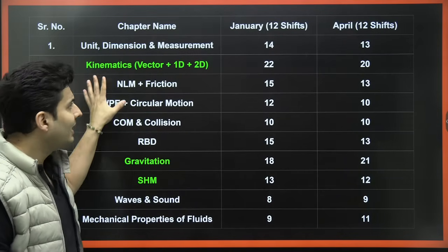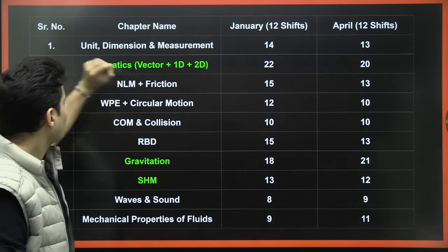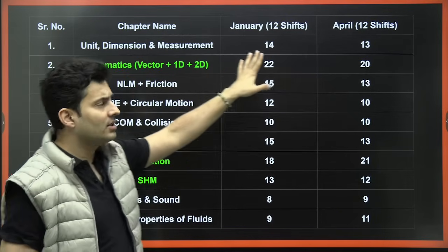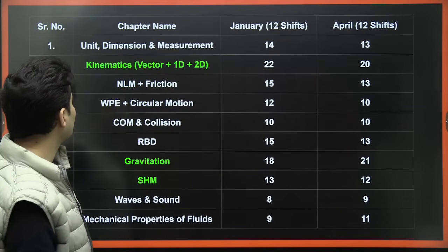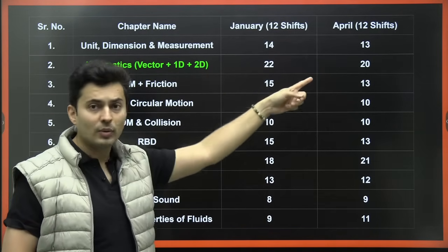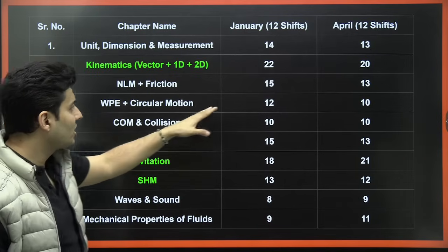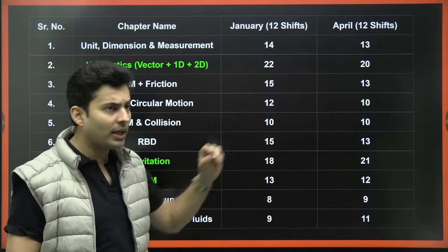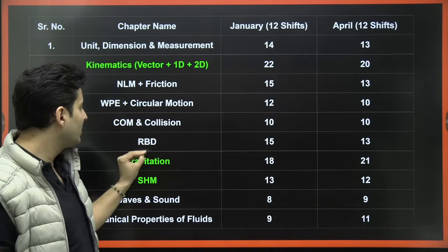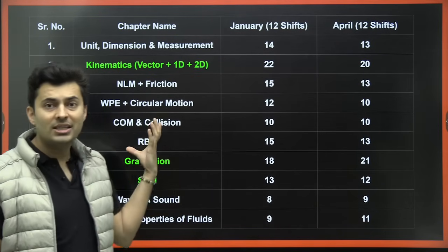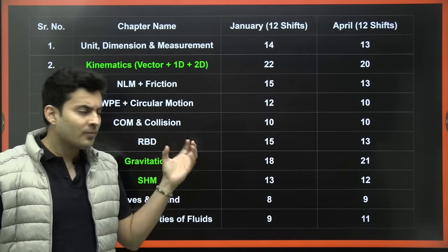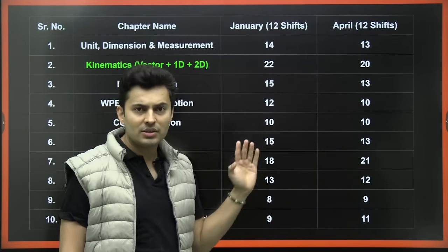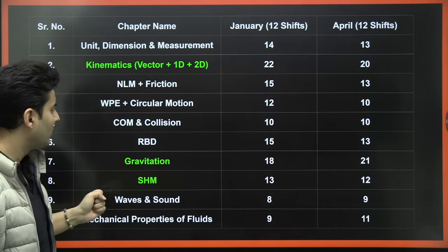Let's begin with the weightages based on previous shifts. The ones in green are really high weightage. Units and dimensions — around 13 to 14 questions every year. Kinematics — heavy weightage, 20 to 22. NLM and friction — 13 to 15, decently weighted. Work, power, energy and circular motion — 10 to 12 questions. Center of mass, rigid body, and collisions are very important chapters but time-consuming, with only 1 to 2 questions expected from those three topics.